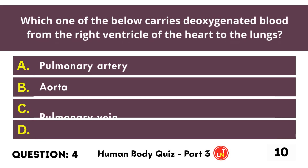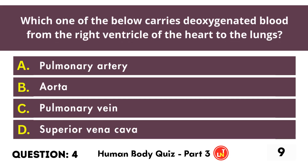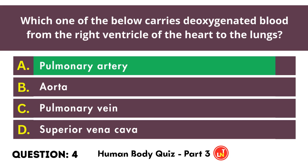Which one of the below carries deoxygenated blood from the right ventricle of the heart to the lungs? Pulmonary Artery.